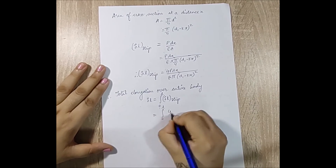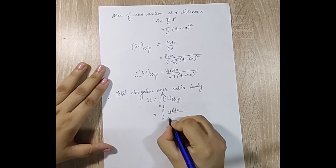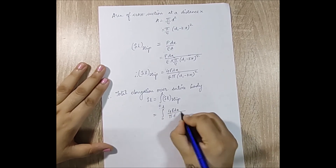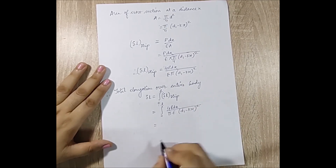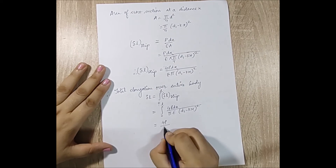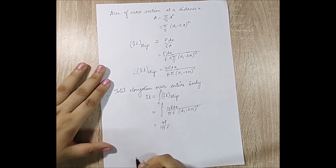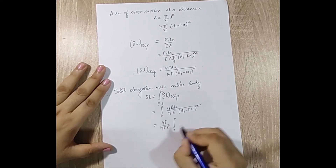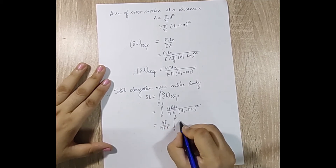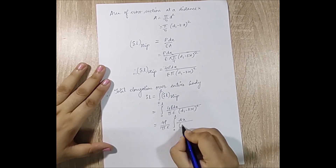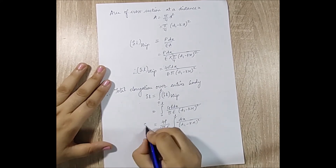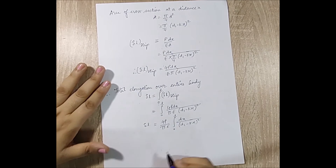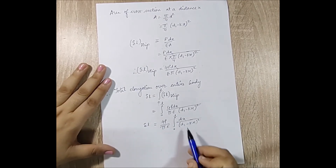So the total elongation δl equals the integral from 0 to L of 4P·dx / (π·E·(d1 - k·x)²). Since 4P, π, and E are all constants, this becomes (4P / π·E) times the integral from 0 to L of dx / (d1 - k·x)².